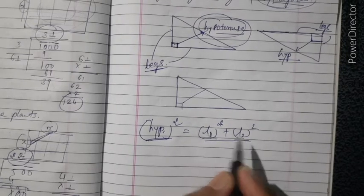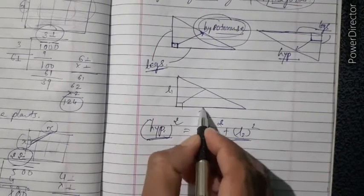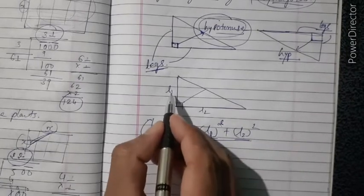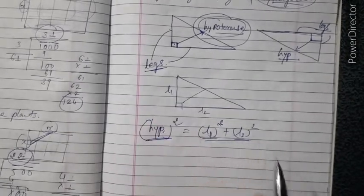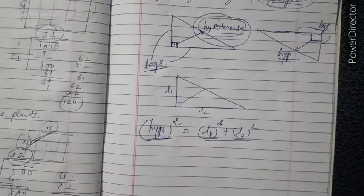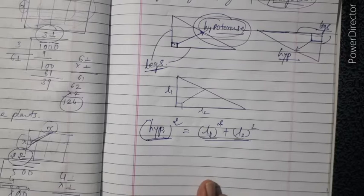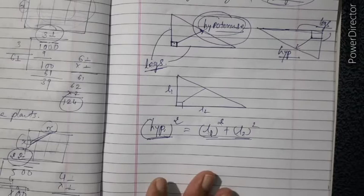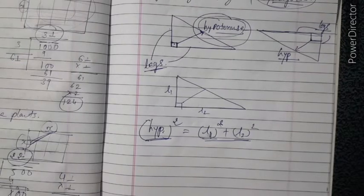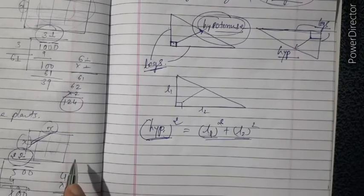The square on the hypotenuse equals L1 squared plus L2 squared, where L1 is leg one and L2 is leg two. The Pythagoras property does not hold if the triangle is not a right angle triangle — it holds for right angle triangles only.